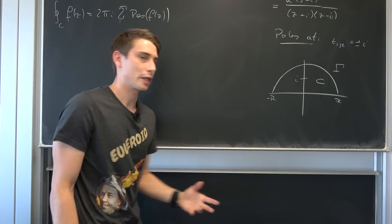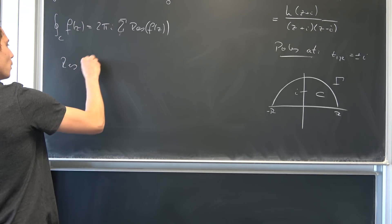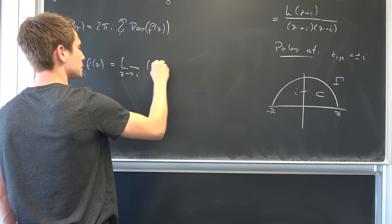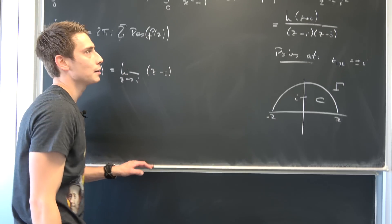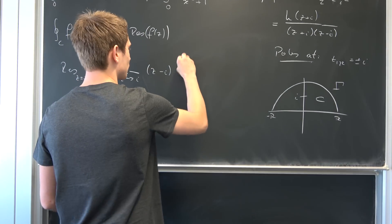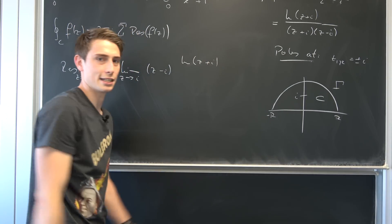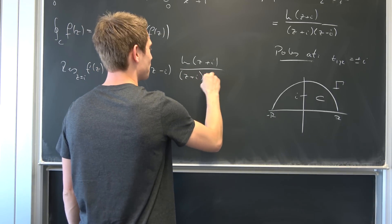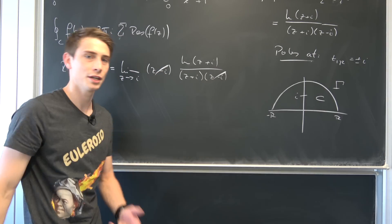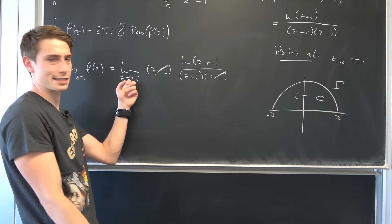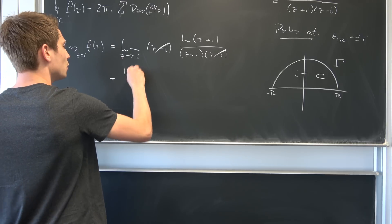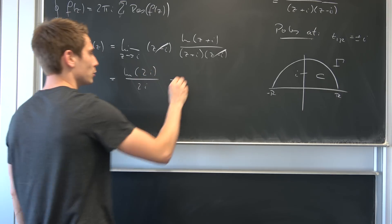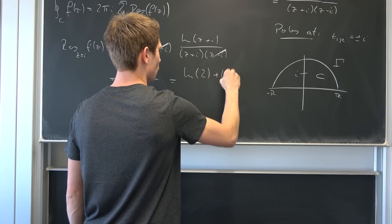How do we calculate this residue? The residue of f(z) at z = i is nothing but the limit as z approaches i of (z − i) times f(z). Since f(z) is the natural log of (z + i) over (z + i)(z − i), the (z − i) factors cancel out. We end up with the natural log of (2i) over (2i), which by log properties splits into the natural log of 2 plus the natural log of i, all over 2i.